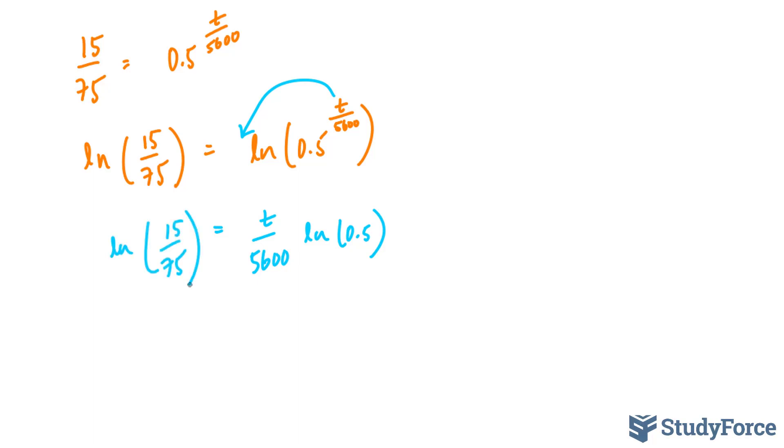Now what we can do is divide both sides by ln(0.5). This will take us one step closer to isolating for T. ln(0.5) on the right side cancels out, and we're left with ln(15/75) divided by ln(0.5) equals T/5,600.